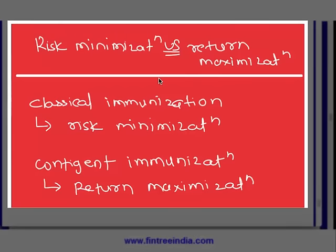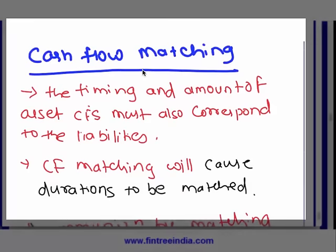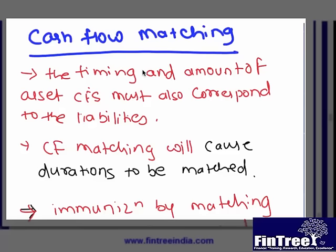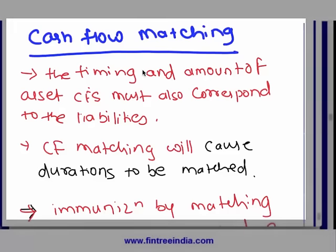For risk minimization versus return maximization: classical immunization focuses on risk minimization, while contingent immunization focuses on return maximization. For cash flow matching versus multiple liability matching: multiple liability matching is relatively less strict, meaning you are not precisely matching cash flows but creating a range, whereas cash flow matching is more precise and therefore more strict and relatively more expensive. Multiple liability matching is relatively less expensive.